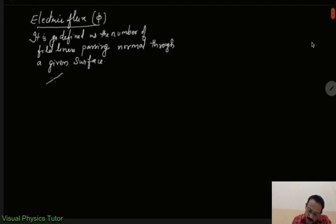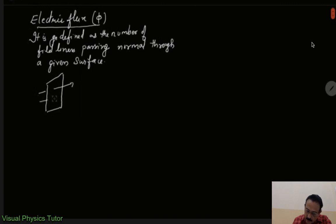So electric flux is defined as the number of field lines passing normal through a given surface. That means if we have a plane sheet and the field lines pass normal through that surface, this can be called electric flux.